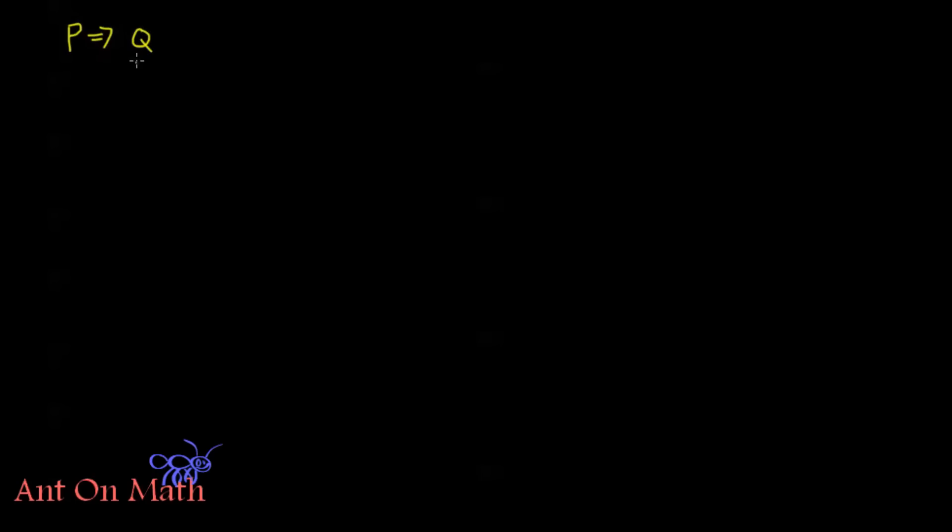Welcome back to Anton Math. In the last video I introduced a conditional statement. Given two propositions P and Q, we say that P implies Q is our conditional statement. Associated with this conditional statement, and this is going to be what I talk about mostly in this video, we have two other statements that kind of come from this.